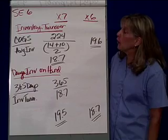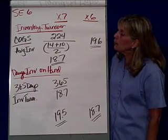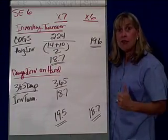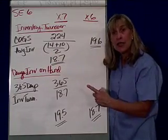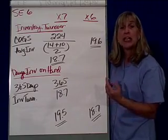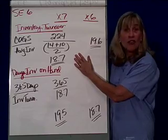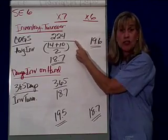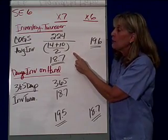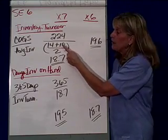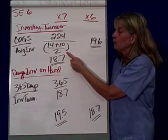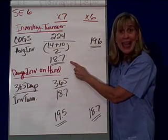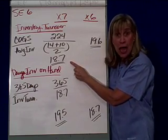The first one we want to look at is inventory turnover. How we compute that is the cost of goods sold divided by the average inventory. To get average inventory, you take beginning of the year inventory plus end of the year inventory, divide by 2. In short exercise 6, we take the cost of goods sold from the income statement, which is $224,000, and divide it by the average of beginning and end of year inventory. If we do that for X7, we find that inventory turns 18.7 times a year.